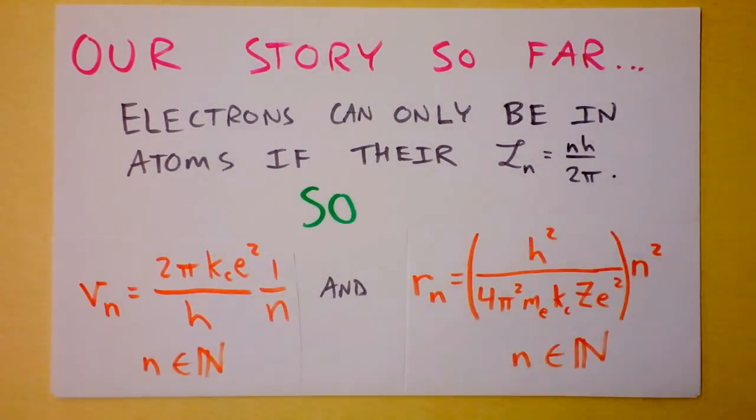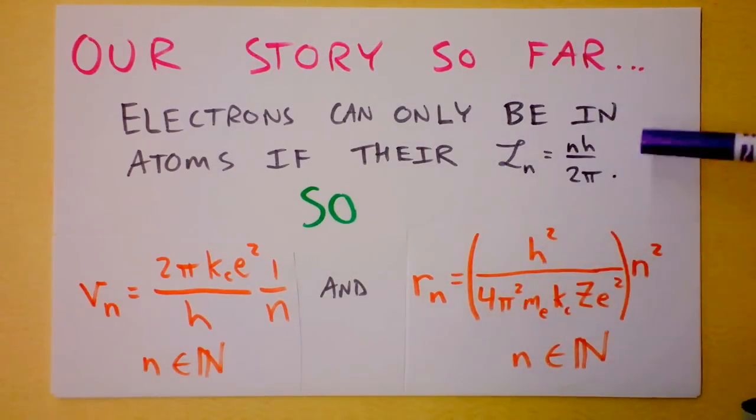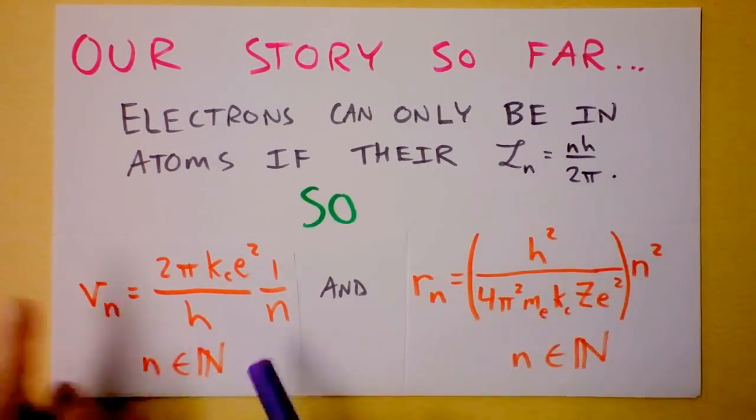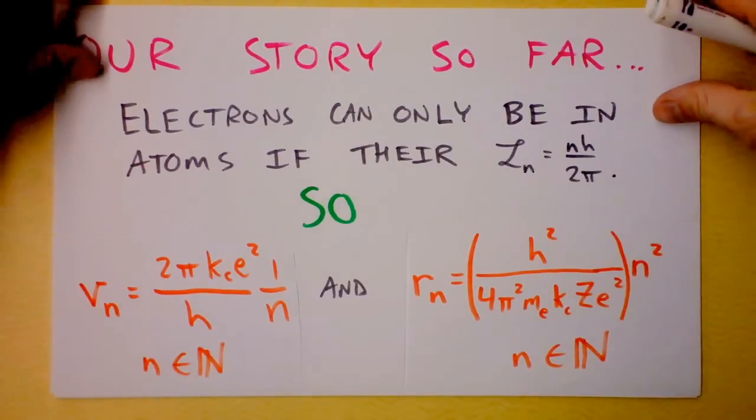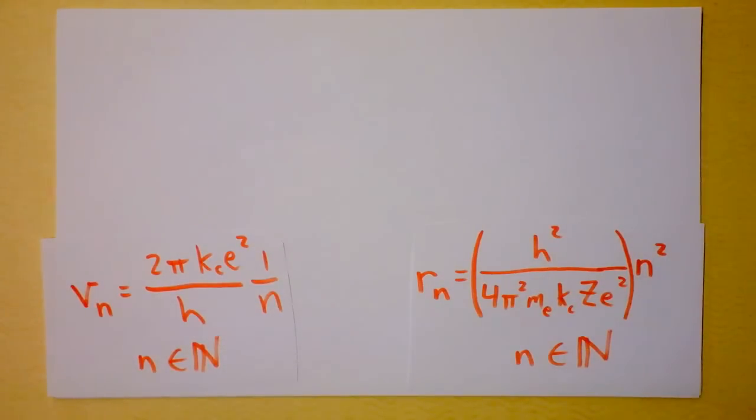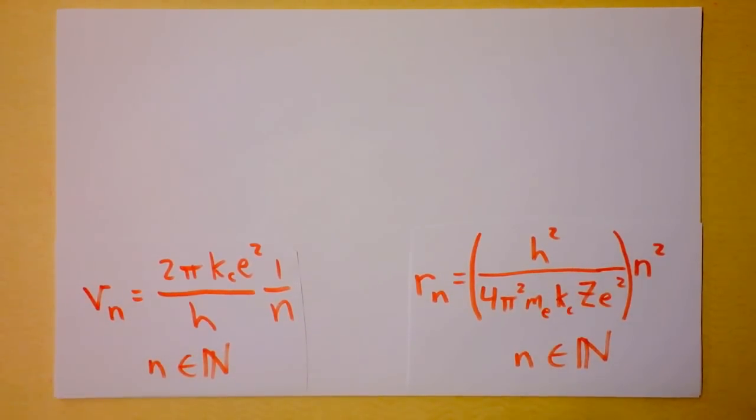We return to those turbulent times. 1913, exactly 100 years ago, Niels Bohr published his theory of atoms and how they work. He says electrons can only be in atoms if their angular momentum satisfies this relation here. That determines a magic radius. We did a little bit of algebra in the last video, which you should watch by the way, and we found that the speed of those electrons is given by the left equation, and the radius of the electronic orbit is given by the right equation.